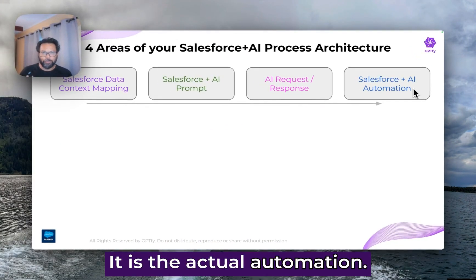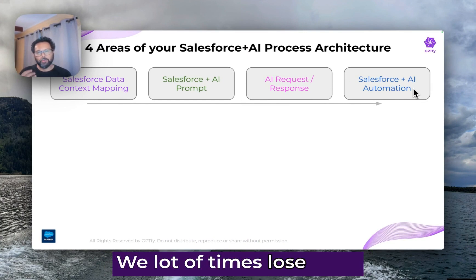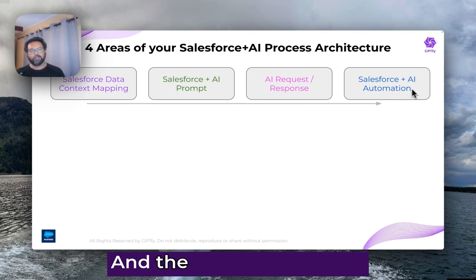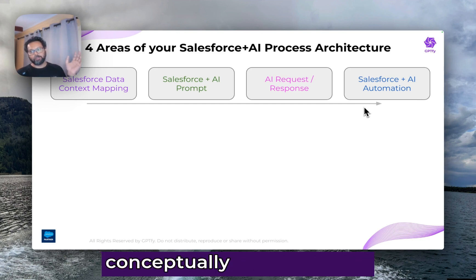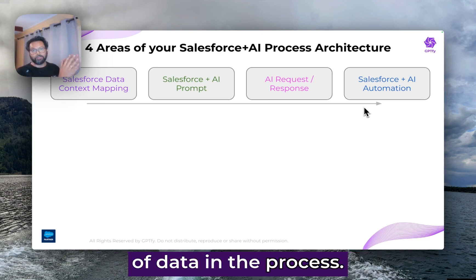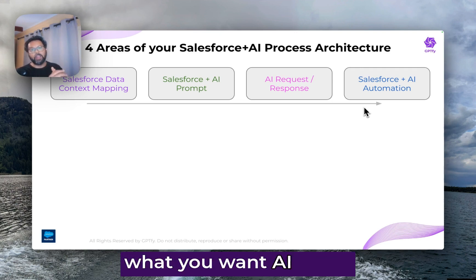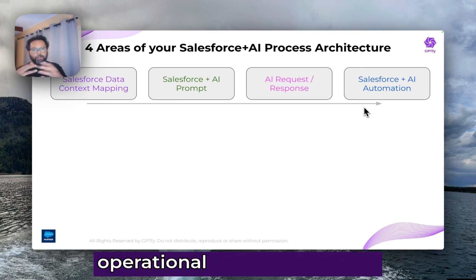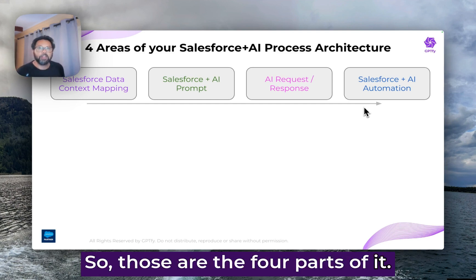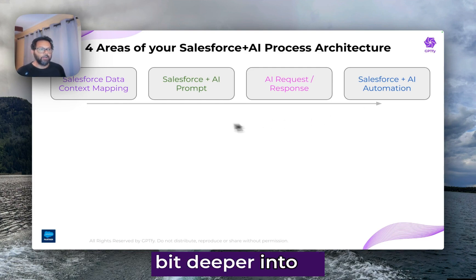Doing something with that response is the fourth part — it is the actual automation. We often lose sight of this portion, but this is really where all of this needs to start making sense. You can conceptually think of it as an arrow: you start with data and your business understanding, then you think about what you want AI to do, then there's the operational request/response portion, and then the actual automation around it. Those are the four parts.